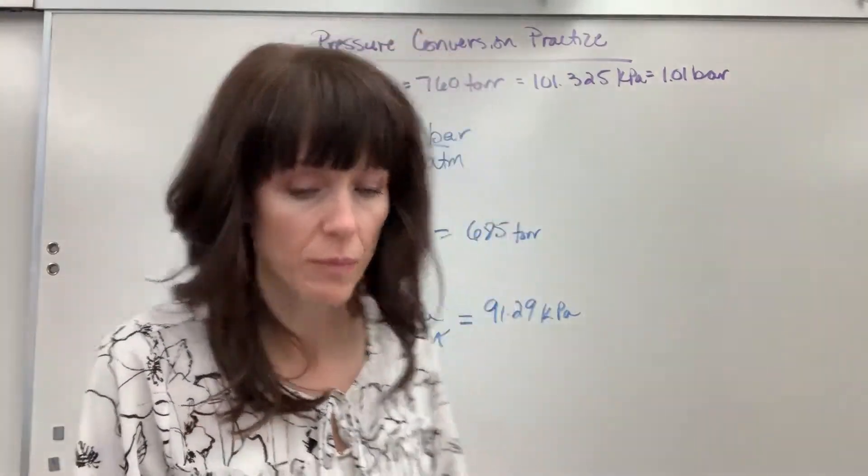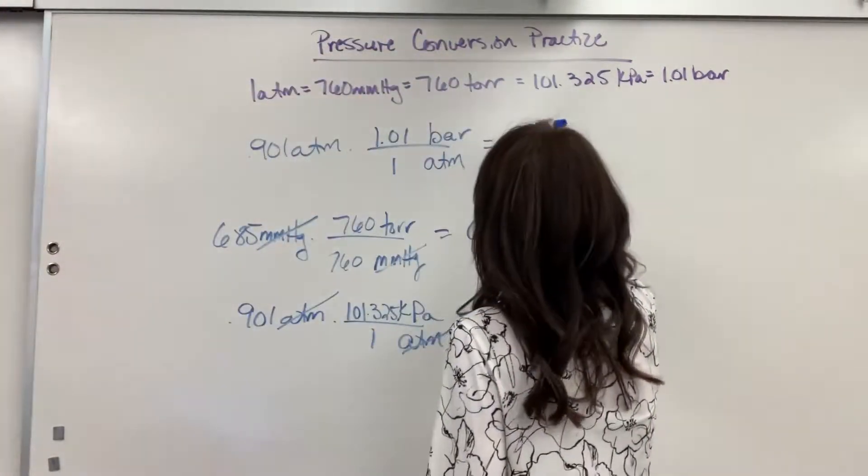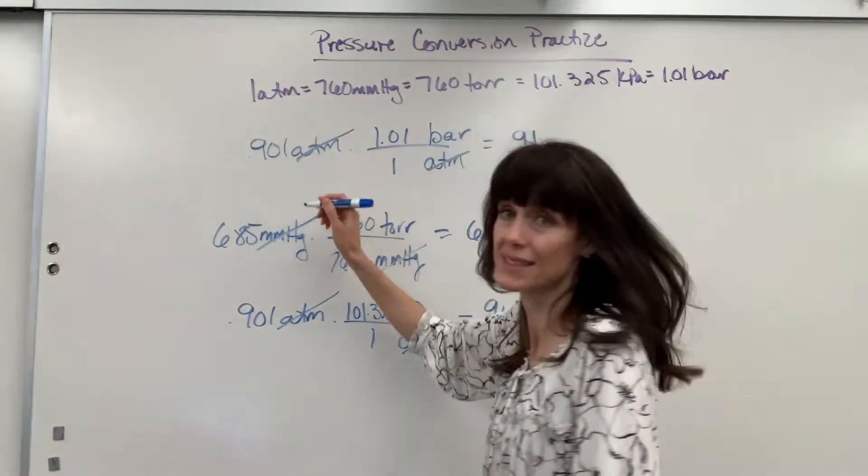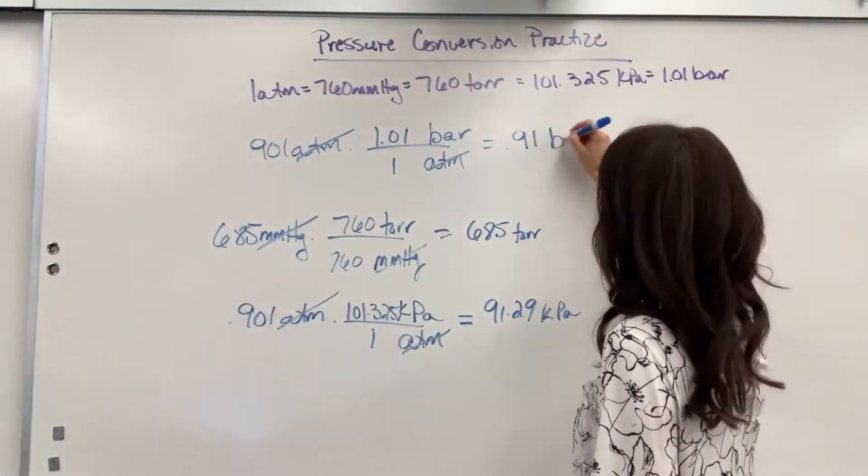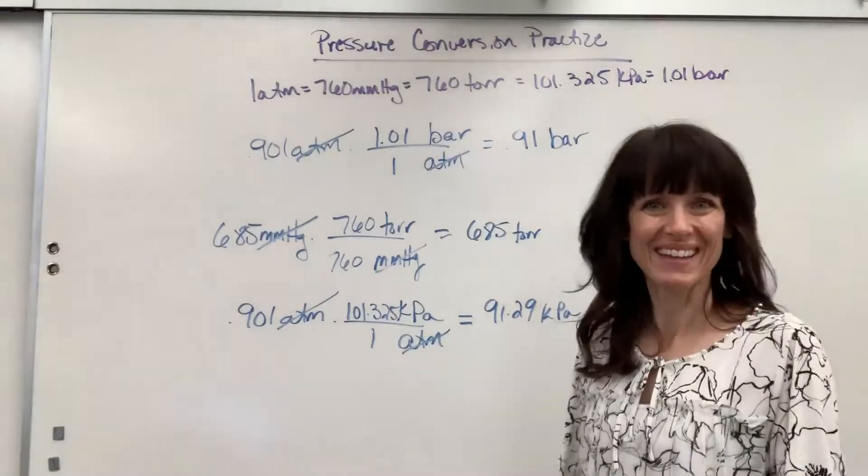And our answer when we multiply this is 0.91. Check out those units. ATM cancels, and we will end with bar. Okay, nice.